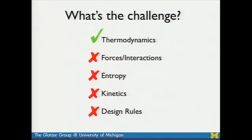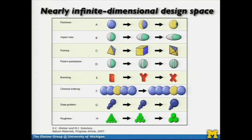I think about assembly engineering the same way chemical engineers think about reaction engineering — where you design reactants and molecules that will react to yield products through many steps in a reaction pathway. You design processes that optimize the product, the yield, and the quality. Here we're trying to do the same thing, only not with chemical reactions but with the assembly of nano-sized objects.